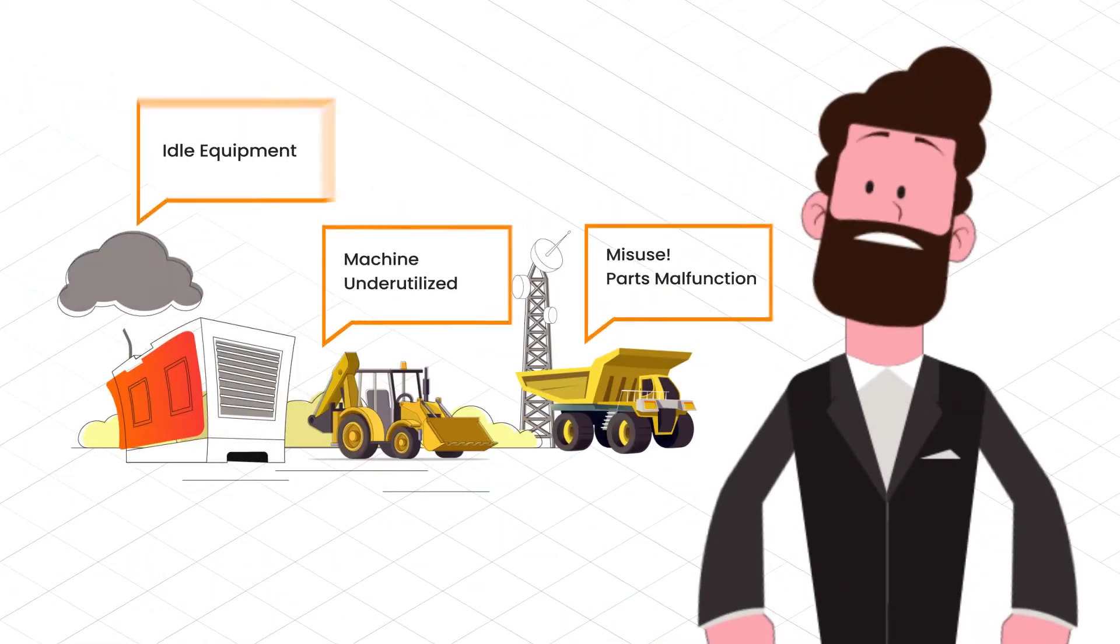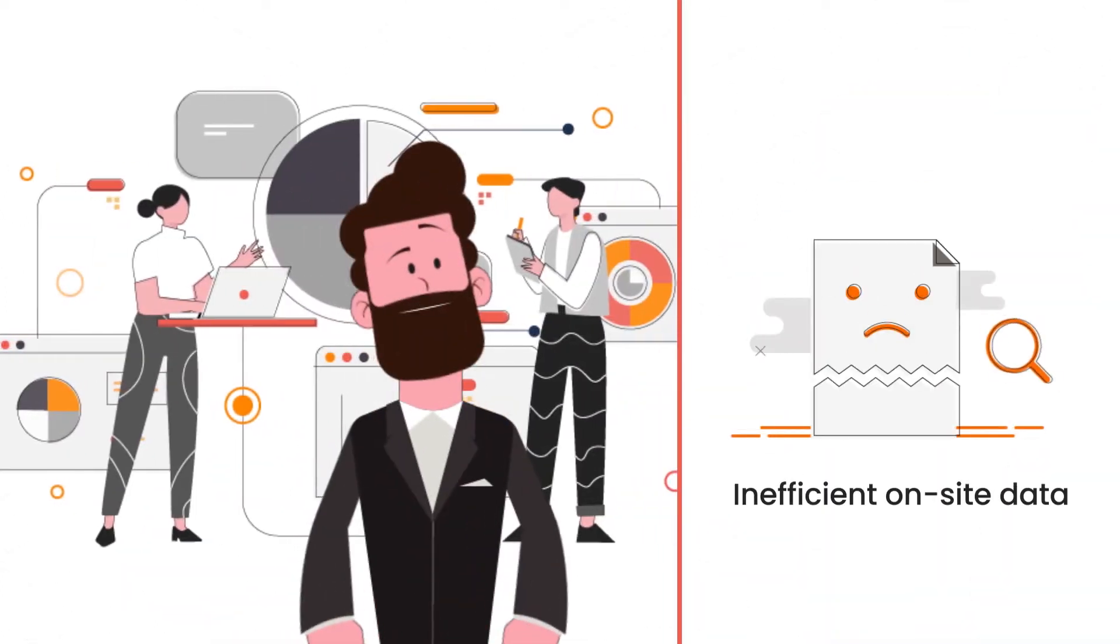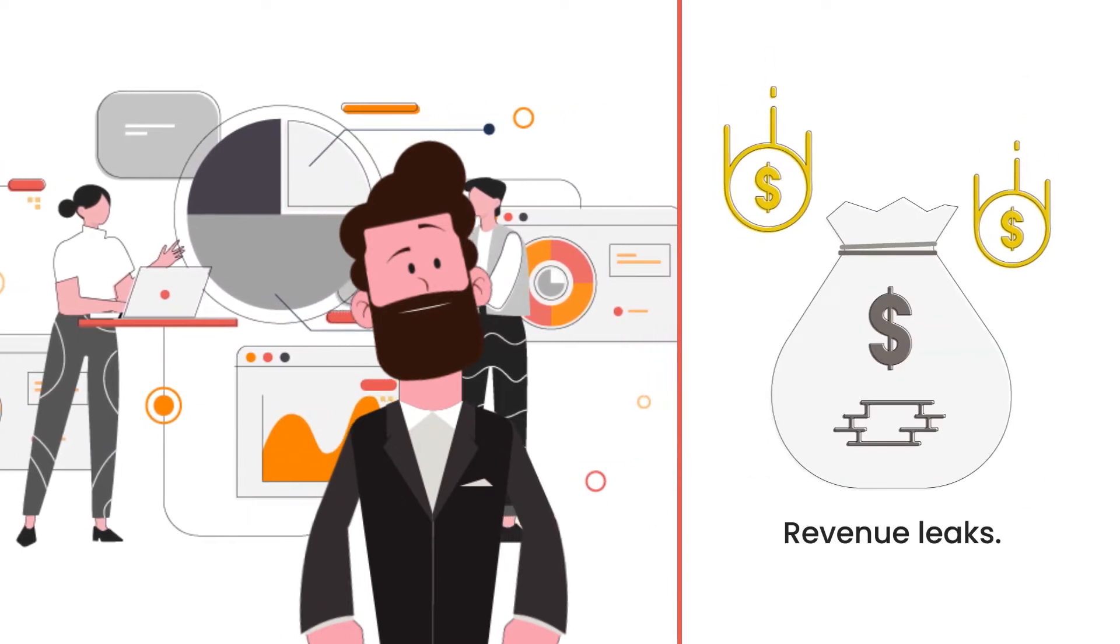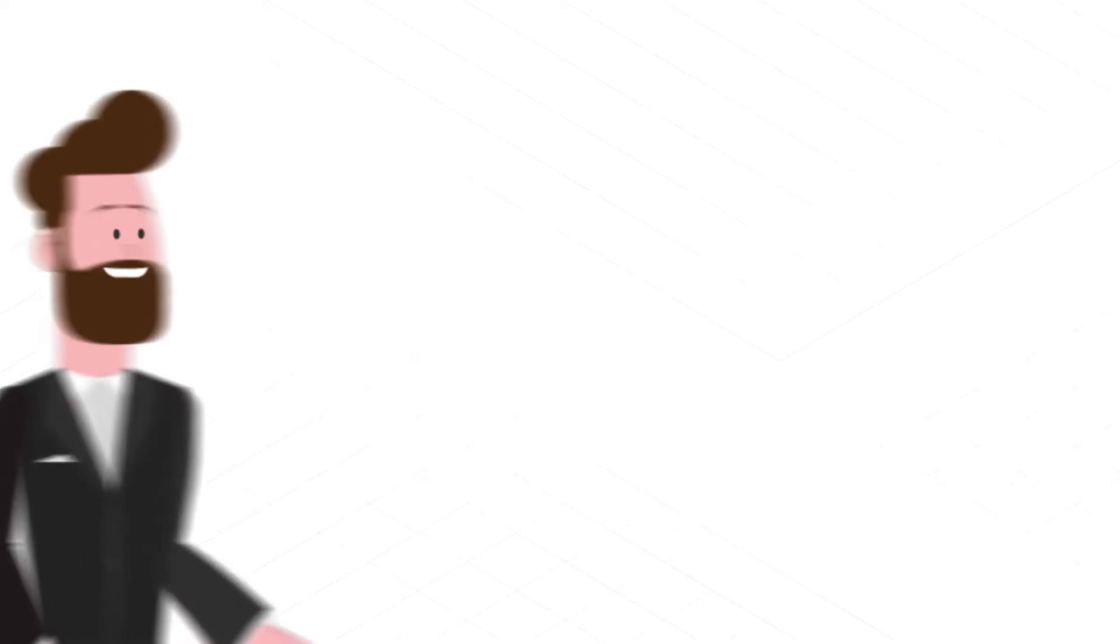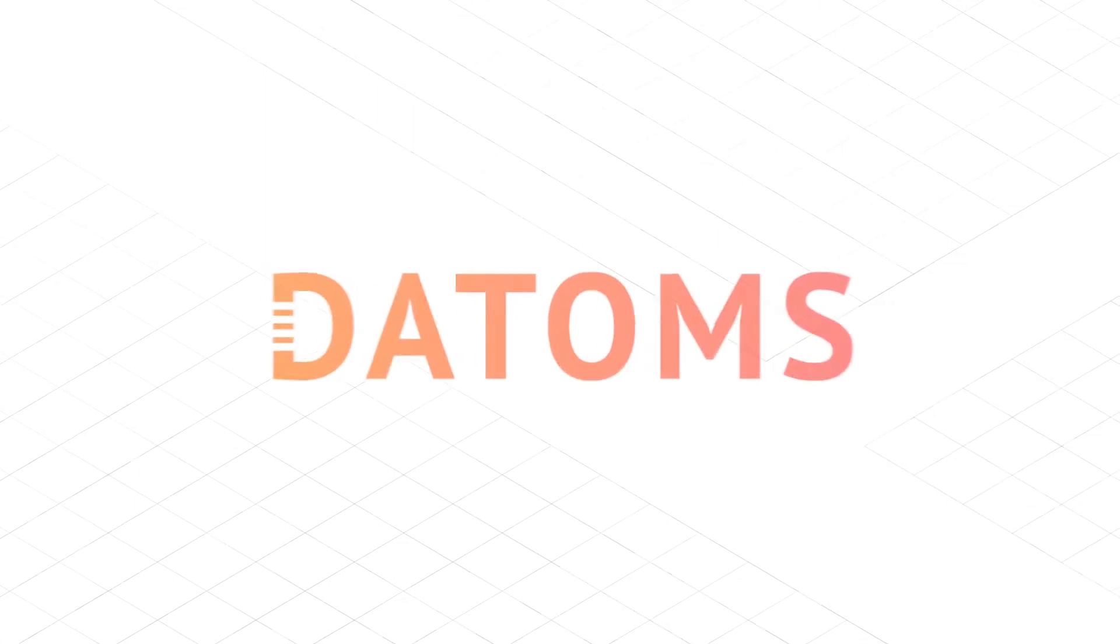He has to deal with equipment inefficiencies like idling, underutilization, and misuse. His company's performance is hampered by non-availability and inefficient on-site data, which results in revenue leaks. His friend Fred tells him about a rental equipment monitoring and management platform from Datums.